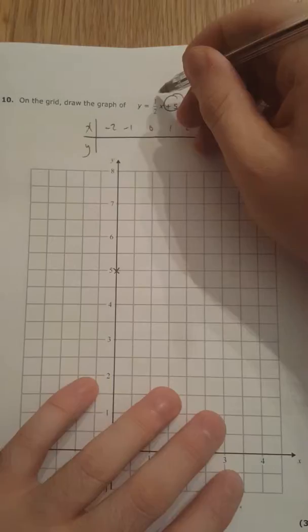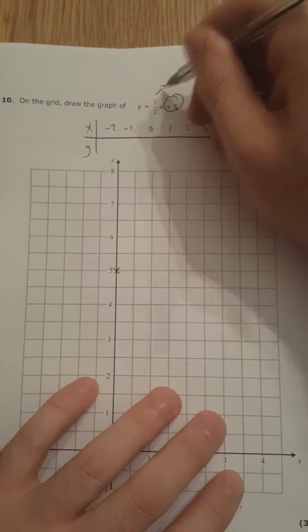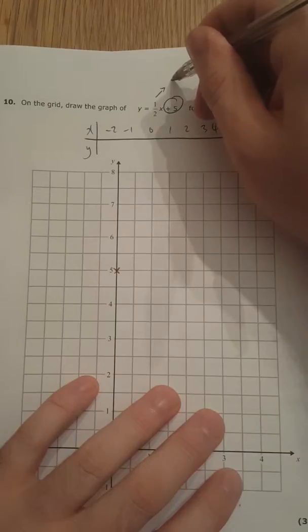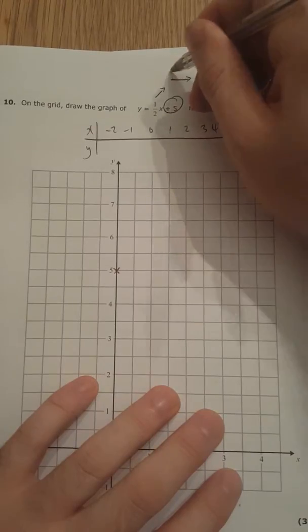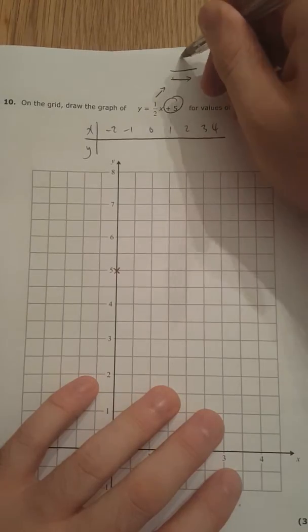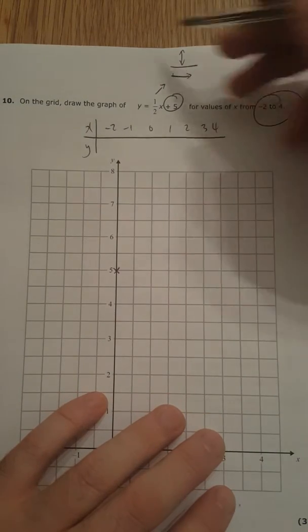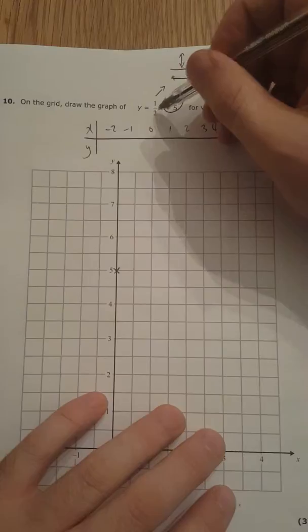The gradient is a half. So remember, you've got a fraction here. This tells you the left and right on the bottom, so it's going along 2, and then up or down is on the top.